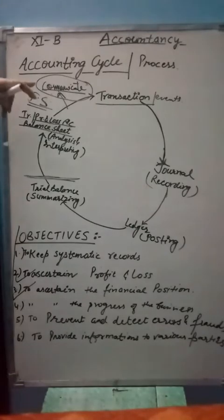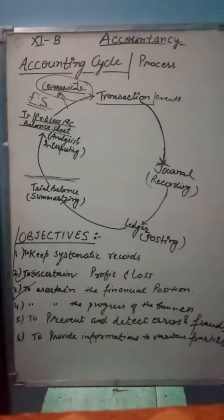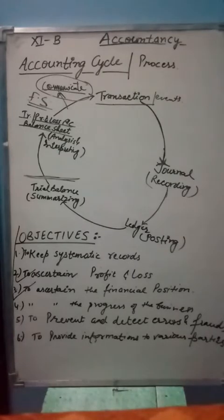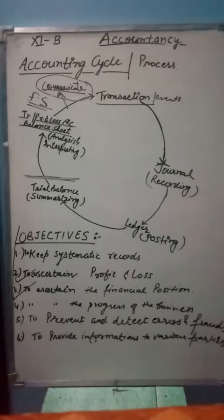Another objective is to provide information to various parties. The main objective of accounting and financial statements is to communicate accounting information to various interested parties. This information helps in taking sound and wise decisions about the business entity.